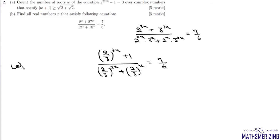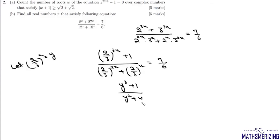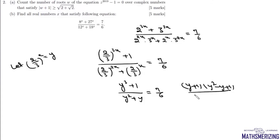We let y = (2/3)^x, so the expression becomes (y³ + 1)/(y² + y) = 7/6.